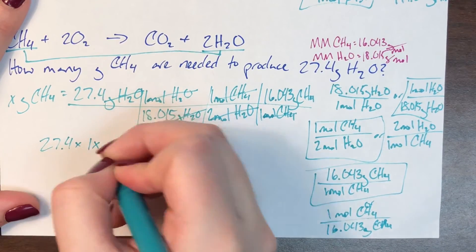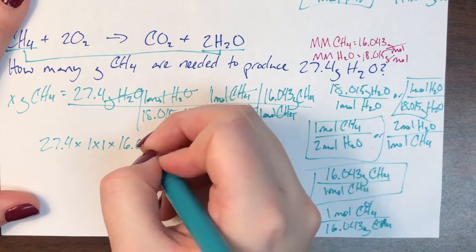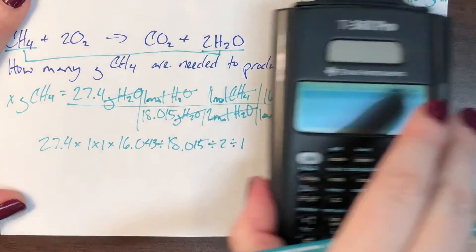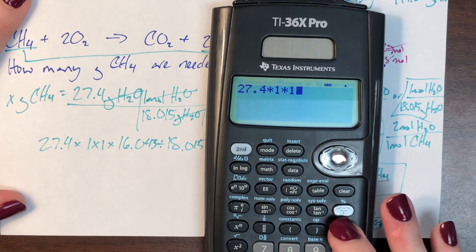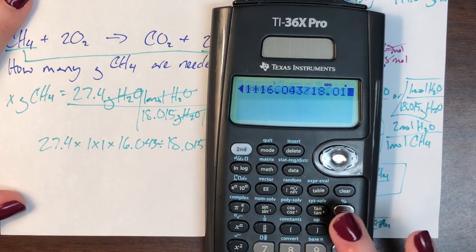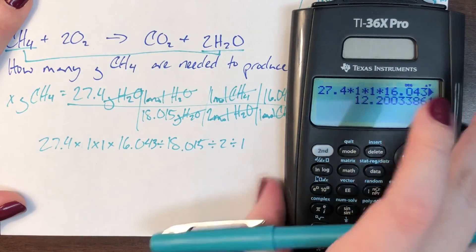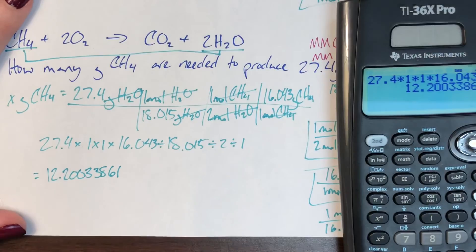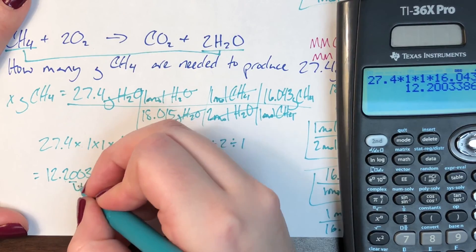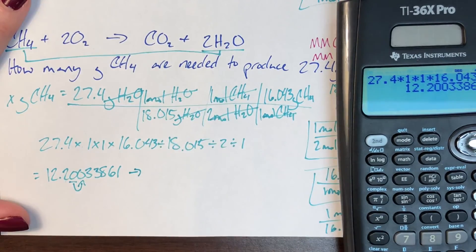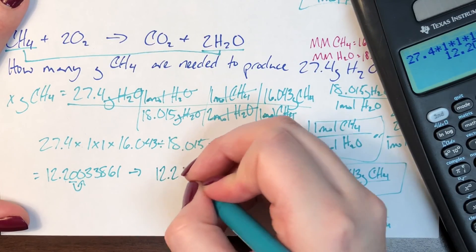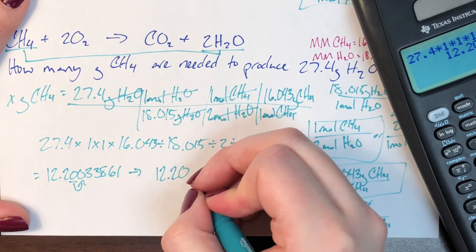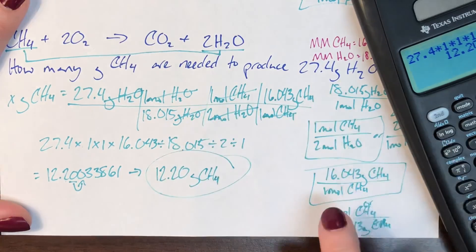Multiply across the top: 27.4 × 1 × 1 × 16.043, and divide by everything on the bottom: 18.015 × 2 × 1. That gives 12.20033861. Rounding to 2 decimal places — the third decimal is 0, which does not round up — so my final answer is 12.20 grams CH4.